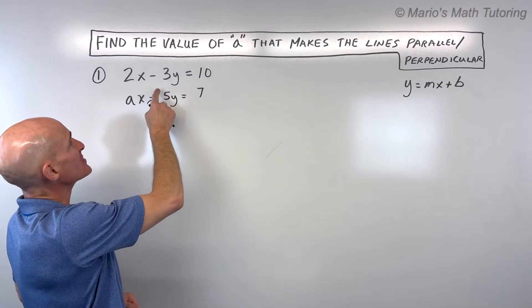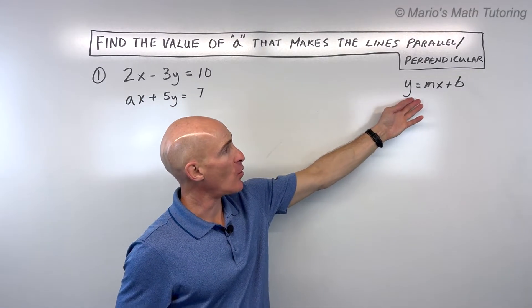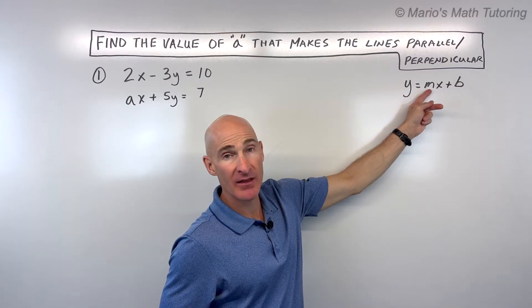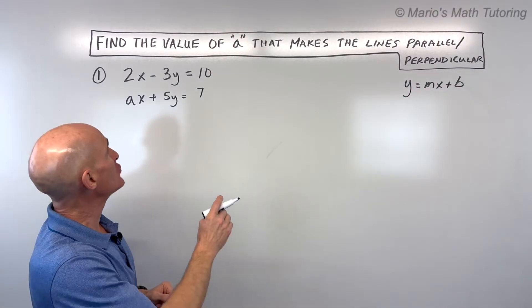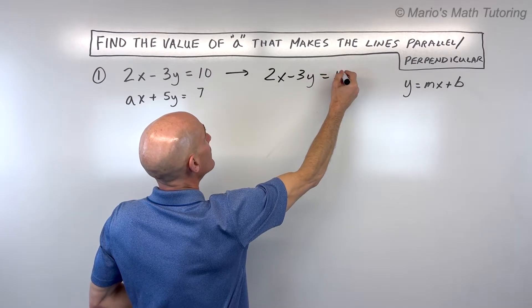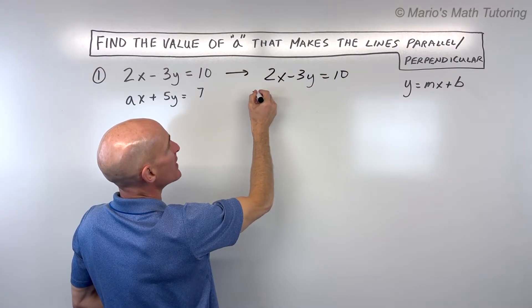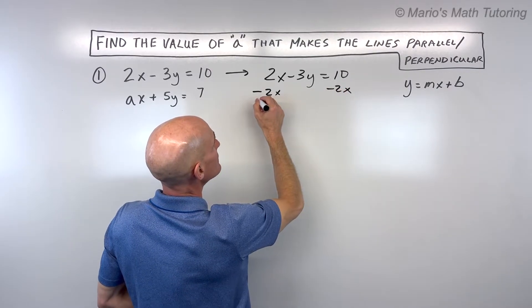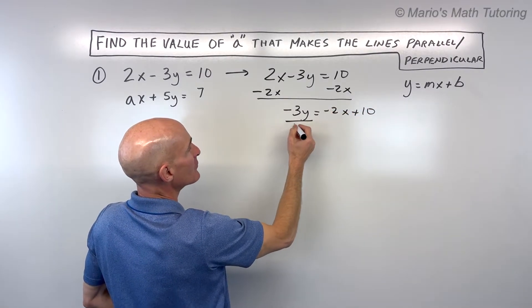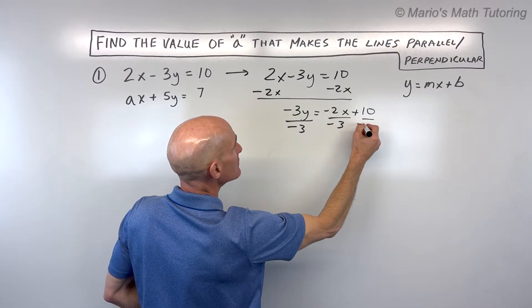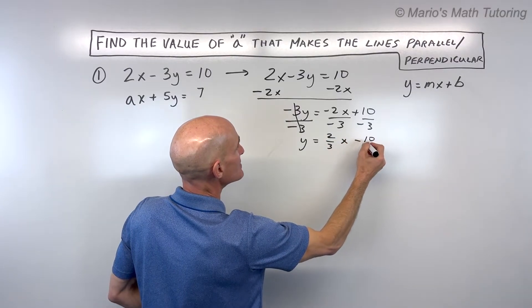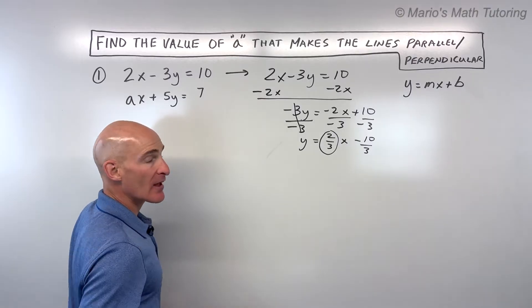Notice that these equations are not in slope-intercept form — not in y = mx + b form. We want to rearrange them and solve for y so we can identify the slope m. For the first equation, we get rid of the 2x by subtracting 2x from both sides, giving us negative 3y = negative 2x + 10. Dividing everything by negative 3, we get y = (2/3)x − 10/3, so the slope of that line is 2/3.